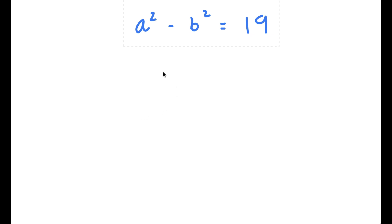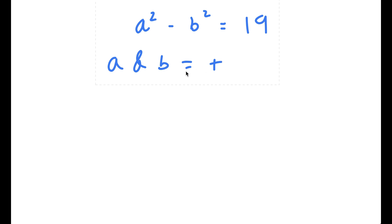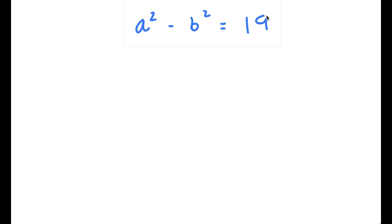So in this problem, I have a squared minus b squared is equal to 19. I want to note that a and b are both positive integers, and we want to find the value of a and b. To start, we begin with a squared minus b squared is equal to 19.